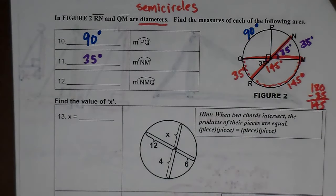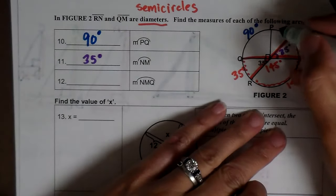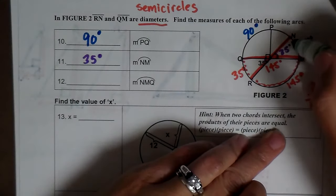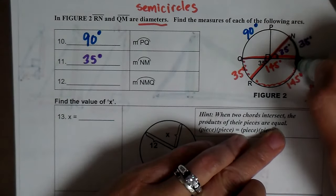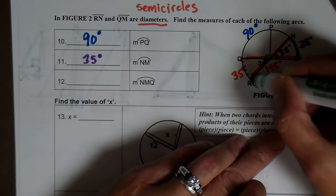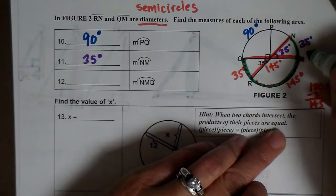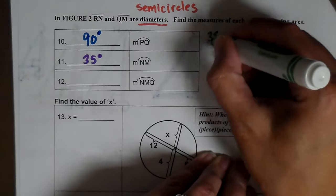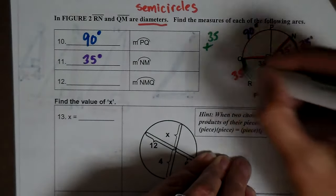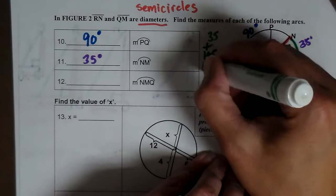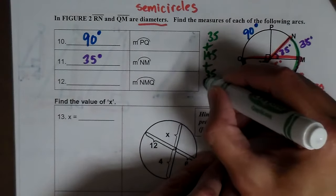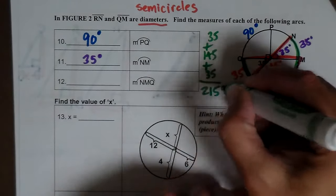And then to find the last one, to find NMQ, we're going to start at N, go through M, and go all the way through Q, I add them together, 35 plus 145 plus 35. And you get 215 degrees.